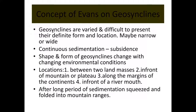In this video, the remaining concepts on geosynclines are discussed. The first is the concept of e-bounds on geosynclines. Geosynclines are varied, so it is difficult to present a definite form and location. They can be narrow or wide, and continuous sedimentation leads to subsidence, but the shape and form can change with changing environmental conditions. Locations can be anywhere — between two landmasses, in front of a mountain or plateau, or along the margins of continents.